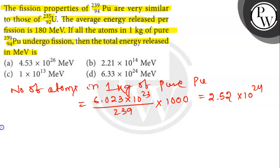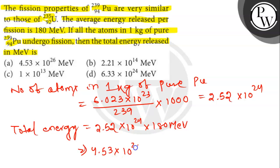As the average energy released in fission is 180 MeV, the total energy released is 2.52 × 10^24 times 180 MeV. So it will be 4.53 × 10^26 MeV.